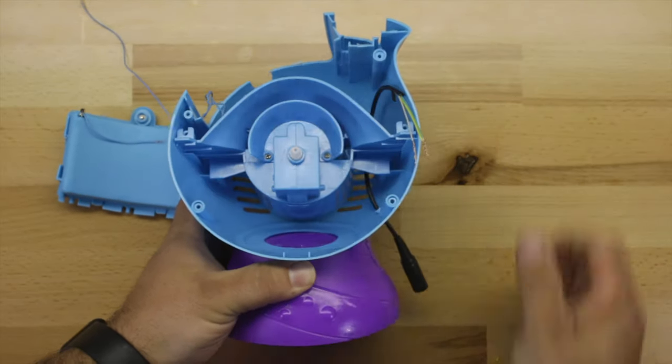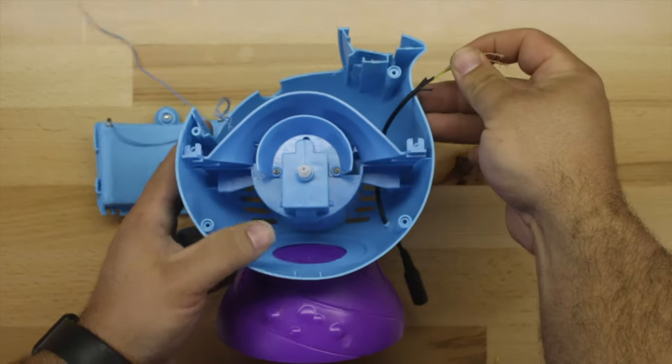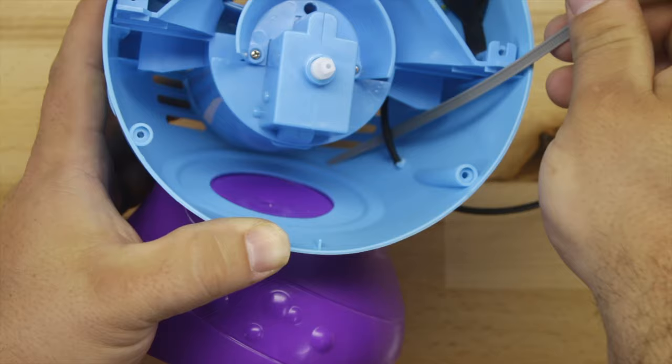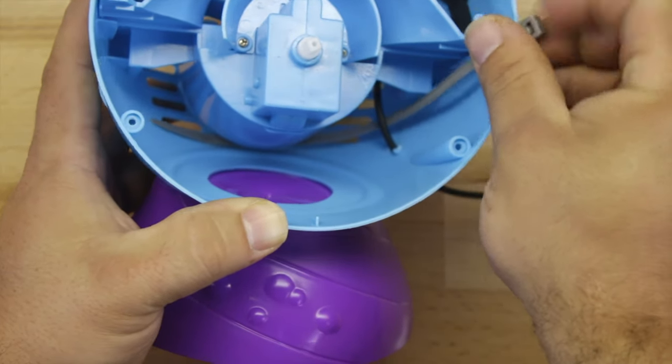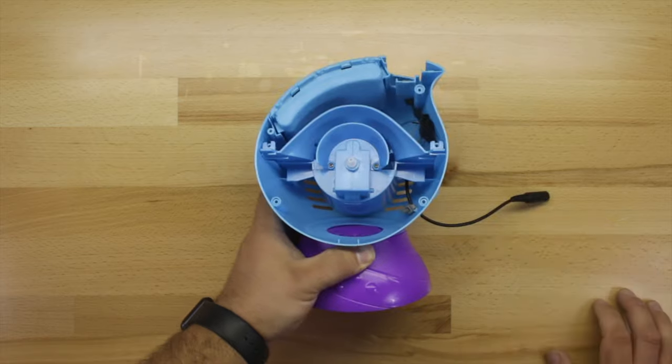Reinsert the fan assembly into the housing and make sure you have enough slack. Go ahead and secure the 3.5mm headphone jack line with a zip tie. This will keep it from accidentally being pulled out.